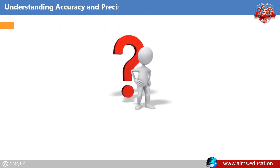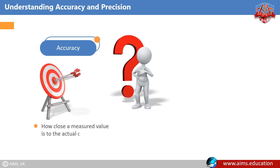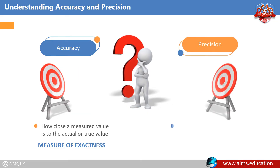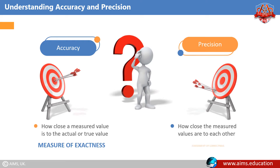Understanding Accuracy and Precision. Accuracy represents how close a measured value is to the actual or true value — it is the measure of exactness. Precision represents how close the measured values are to each other — it is an assessment of correctness.